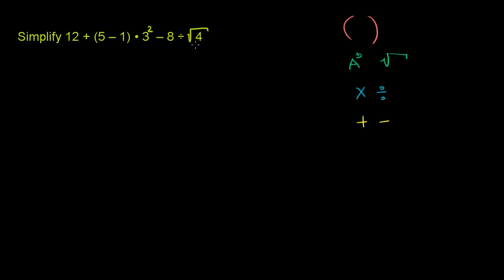So let's apply that to this over here. We have one set of parentheses right there, and inside you have 5 minus 1. So we want to evaluate that first of all. 5 minus 1 is 4. So our problem becomes 12 plus, the 5 minus 1 is 4,